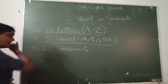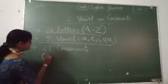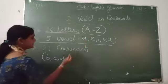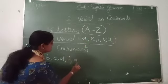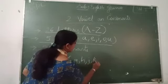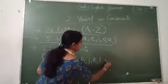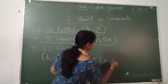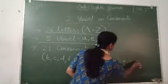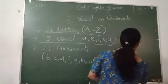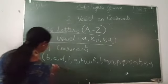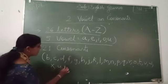So, the consonants are: B, C, D, F, G, H, J, K, L, M, N, P, Q, R, S, T, V, W, X, Y, Z.